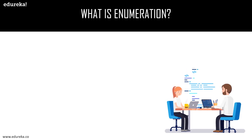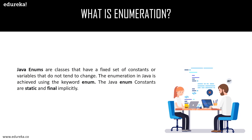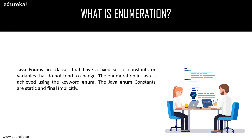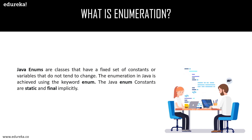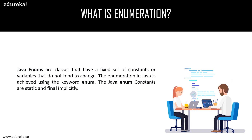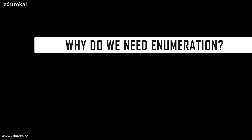Now let us begin with our first topic: what is enum in Java? Java enums are classes that have a fixed set of constants or variables that do not tend to change. The enumeration in Java is achieved using the keyword enum. The Java enum constants are static and final implicitly. Now let us move on to understand what exactly enum is and why do we need it in Java programming.